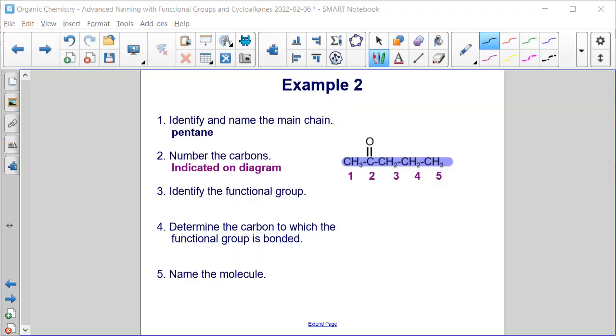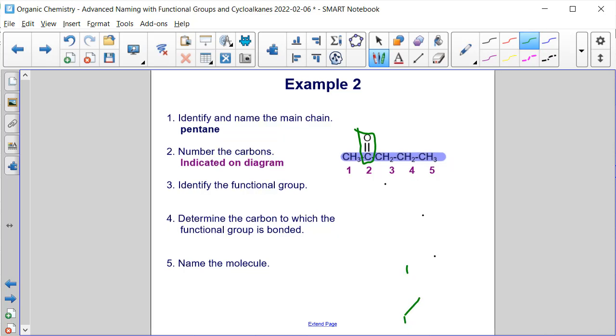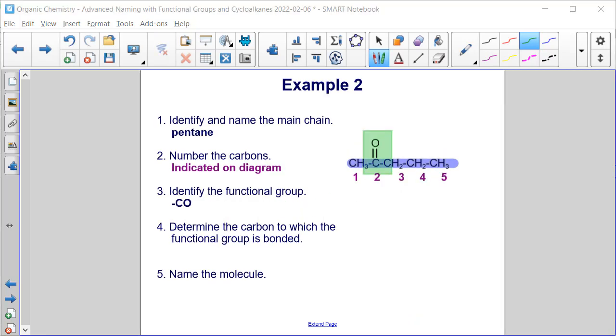All right, from here, once we've numbered the carbons, we need to identify the functional group. So if I highlight in green, we can see this functional group right here. It's a C double bonded to an O. And then on either end, we were bonded to a carbon here. So an R on this side. And then on this side, we're bonded to a different alkyl group. So this is an alkanone. So in green, I've highlighted my functional group. It's that C double bond O group.